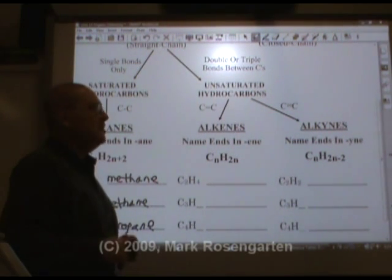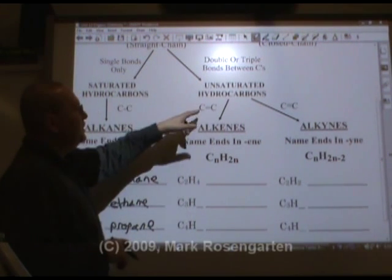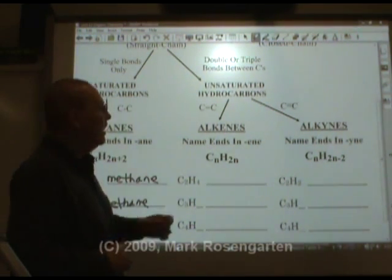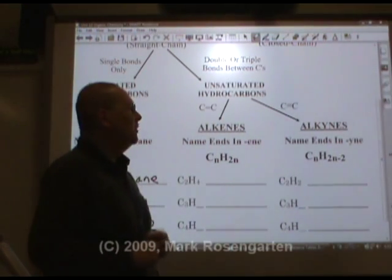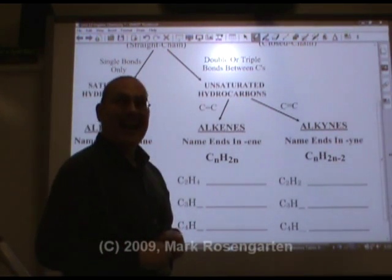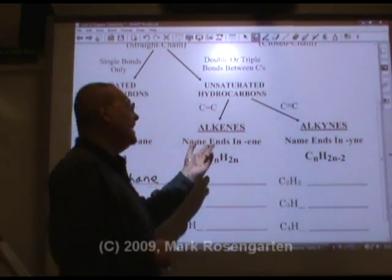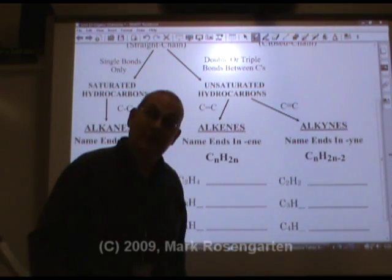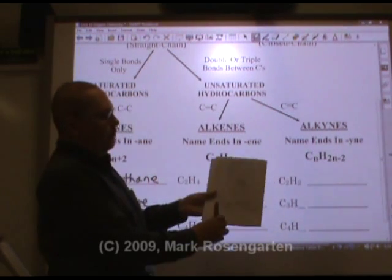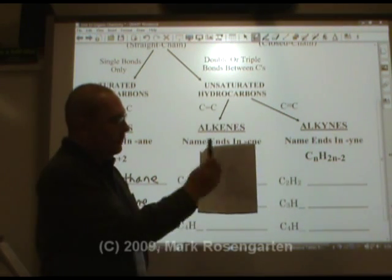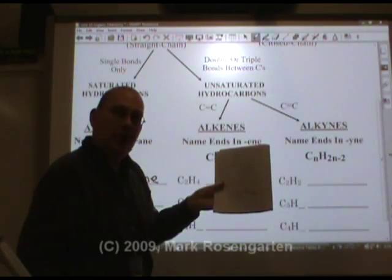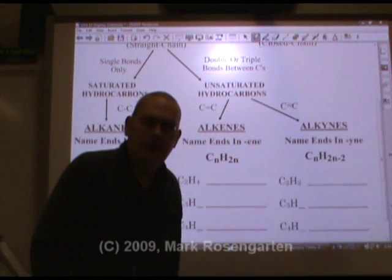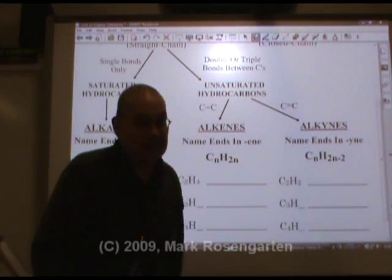Unsaturated hydrocarbons come in two flavors. If there's a double bond in the molecule, it's called an alkene. If there's a triple bond in the molecule, it's called an alkyne. Your reference tables give you all the information you need to know about any of them — you don't have to memorize this, at least not if you're in New York State taking Regents Chemistry.